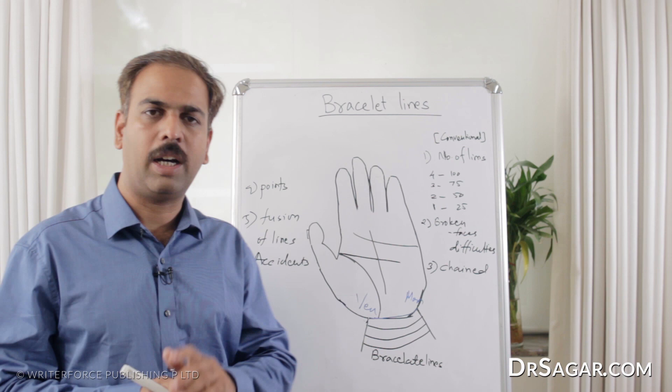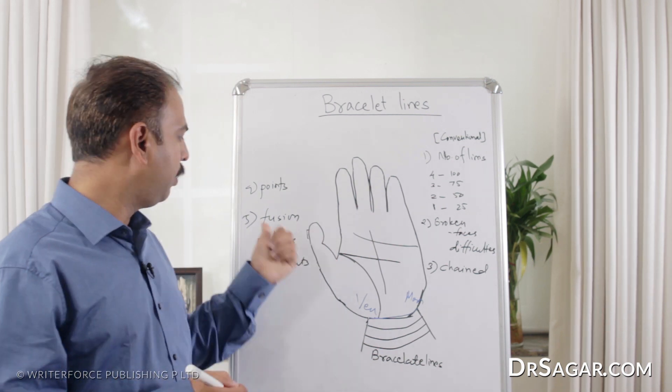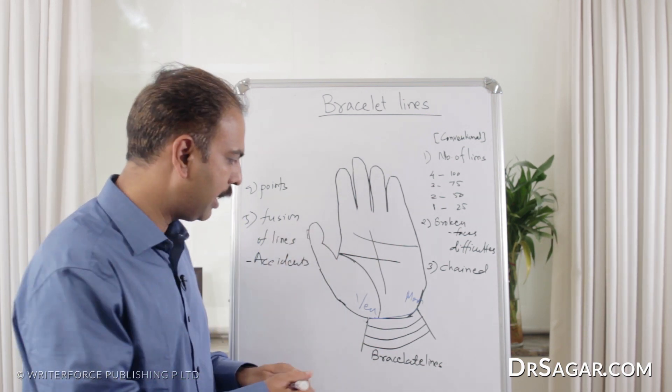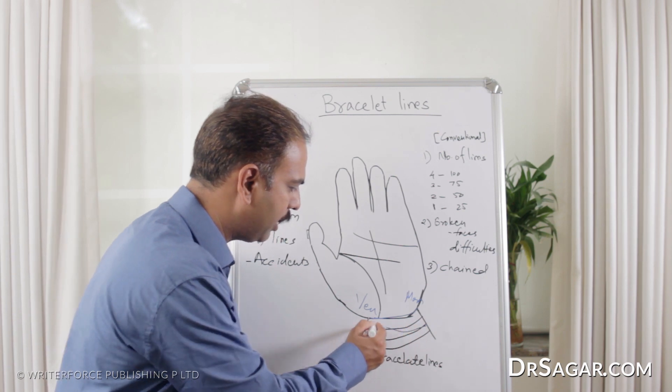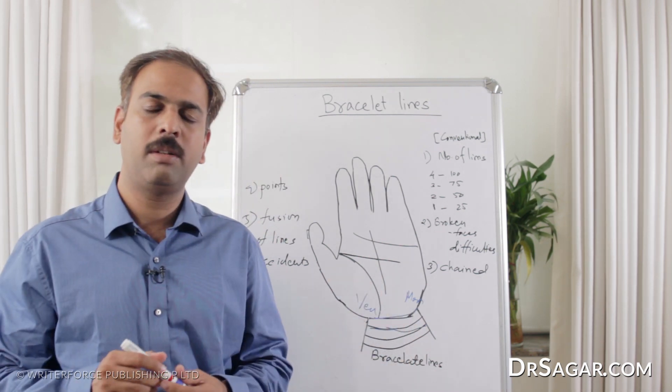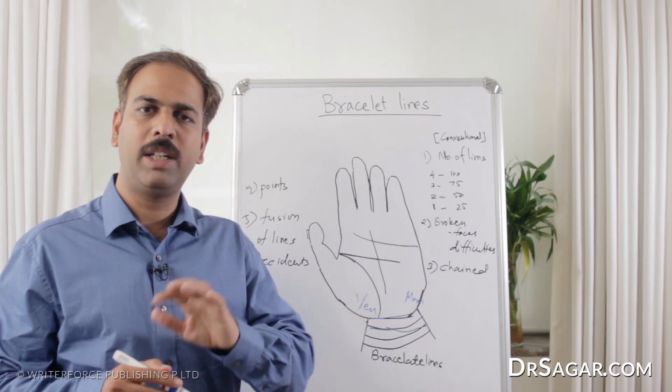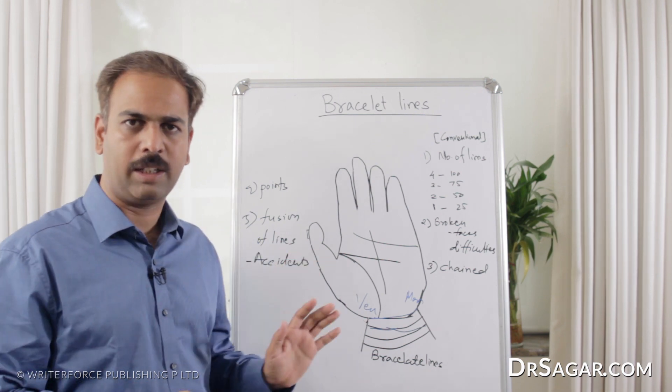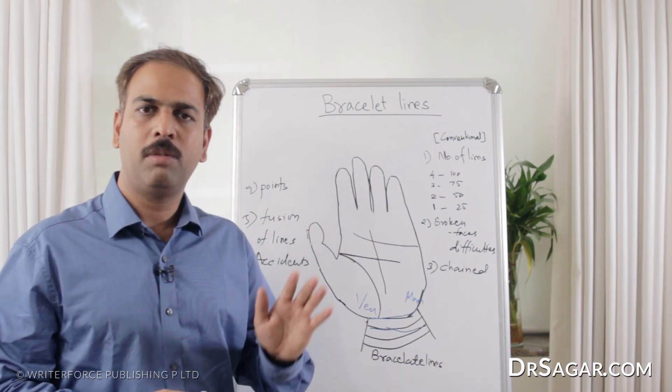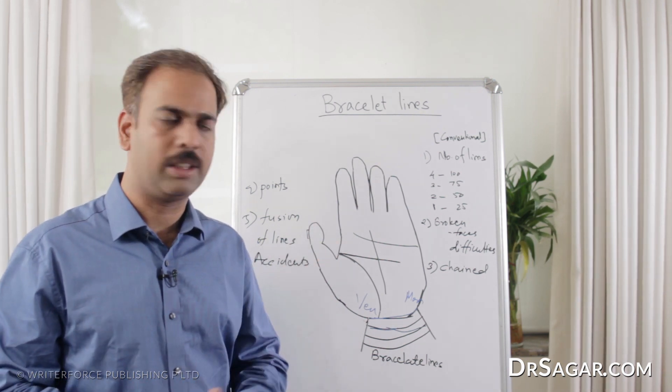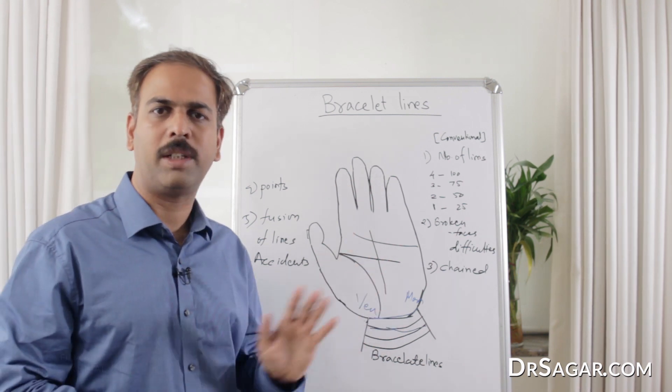Then we have another example, the fusion of the lines. If the bracelet lines are fused with each other, then the person may face a vehicular accident in his life. But as I said, we have to confirm all the things from the other parts of the hand.